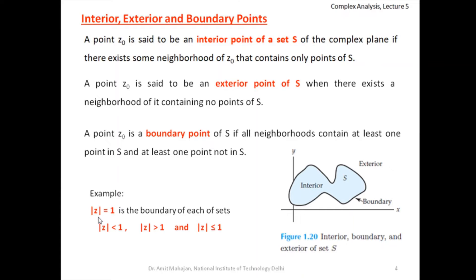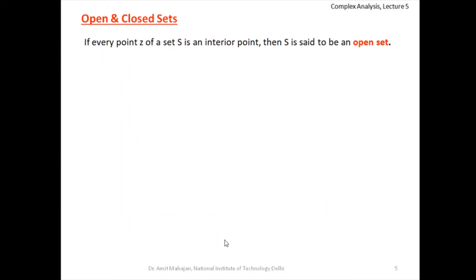For example, |z| = 1, the unit circle, is the boundary of each of these sets: the region |z| < 1 (interior of the circle), the exterior of the circle, or the closed disk. It is the boundary of all these types of regions.